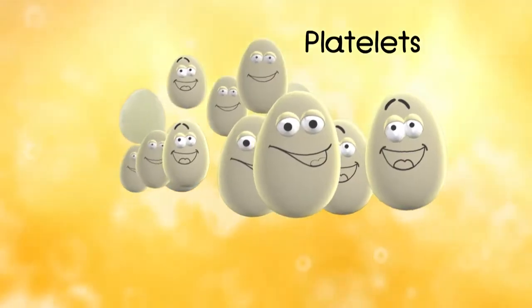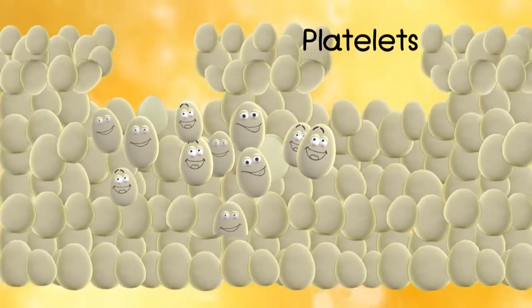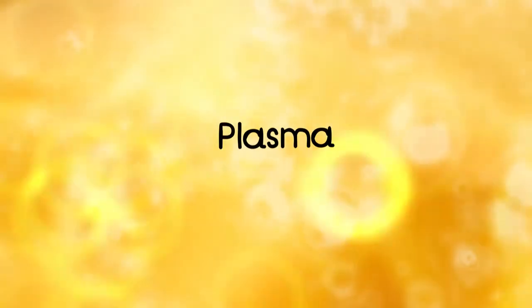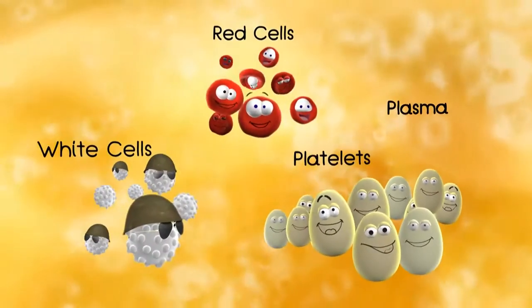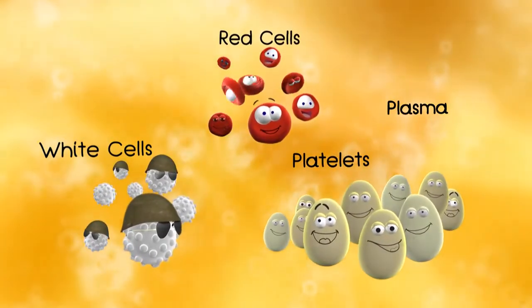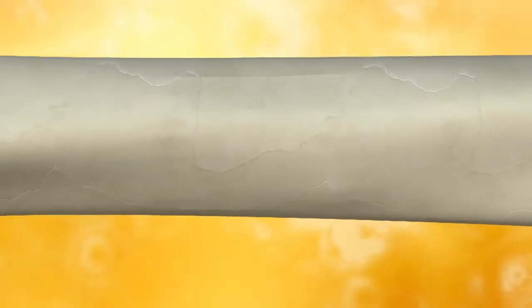The platelets look like tiny eggs and gather and stick together like building blocks to help you stop bleeding. On the other hand, the plasma is a yellow, watery stuff in which all of us float, and carries many nutrients that your body uses to keep you healthy and strong.